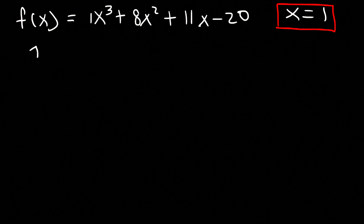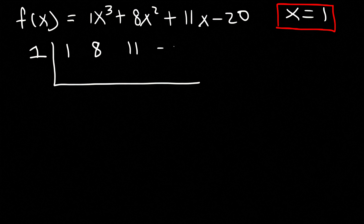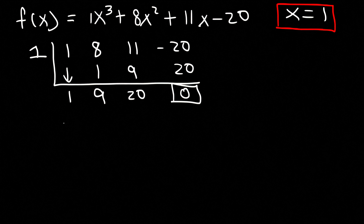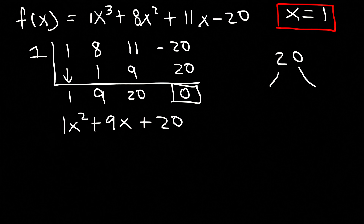Now let's use synthetic division. The coefficients are 1, 8, 11, and -20. Using 1 as the zero: 1 × 1 = 1, 8 + 1 = 9, 1 × 9 = 9, 11 + 9 = 20, 1 × 20 = 20, and -20 + 20 = 0. So the result is x² + 9x + 20. To factor: what two numbers multiply to 20 and add to 9? That's 4 and 5, since 4 × 5 = 20 and 4 + 5 = 9.